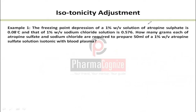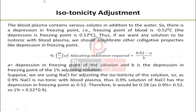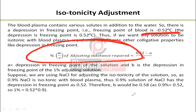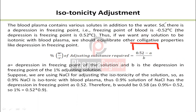The formula is: the amount of NaCl to add equals (0.52 minus A) divided by B, where A is the freezing point depression of the final solution as already provided (based on the drug concentration to be used), and B is the freezing point depression contributed by 1% of the adjusting agent.